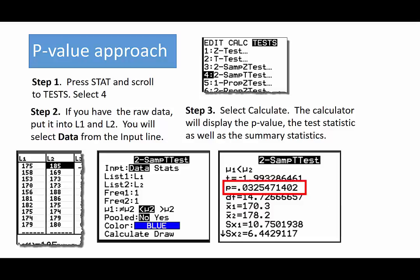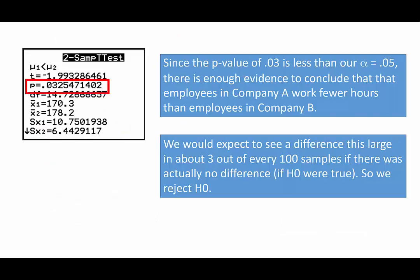So since the p-value of 0.03 is less than our alpha, 0.05, there is enough evidence to conclude that the employees in Company A work fewer hours than employees in Company B.